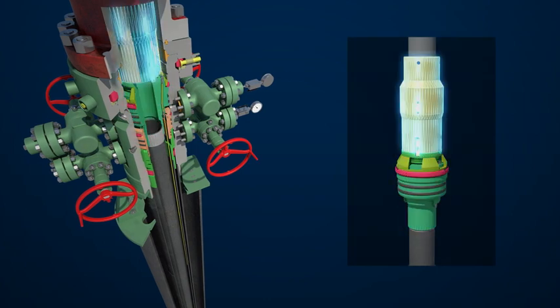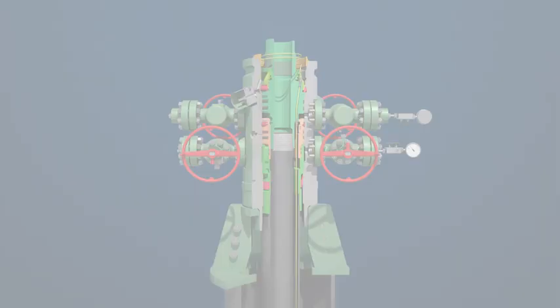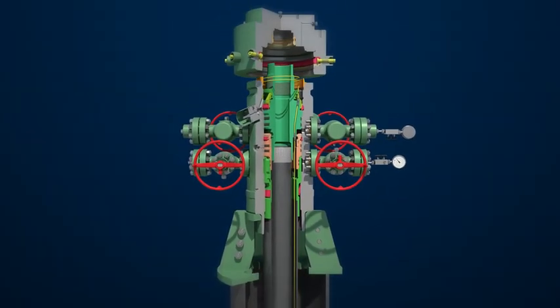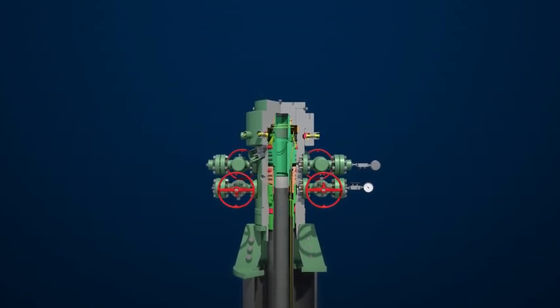The tubing hanger and running tool assembly is assembled and tested offline. All control lines can then be installed and tested without breaking the connection, saving time on the rig floor.